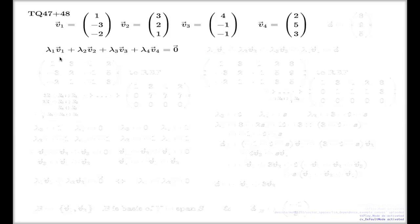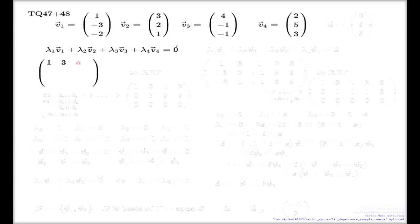We need to find a non-trivial solution to this system — we all know how to do that from the first semester. We extract the augmented matrix and take it to row echelon form. Because the right-hand side is the zero vector, I will skip it and only extract the principal part of the augmented matrix: my vectors v1, v2, v3, and v4 taken as columns.